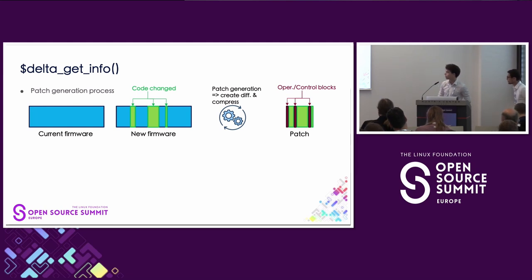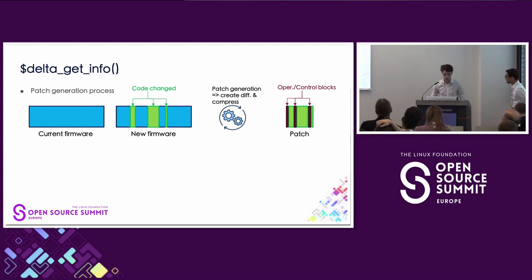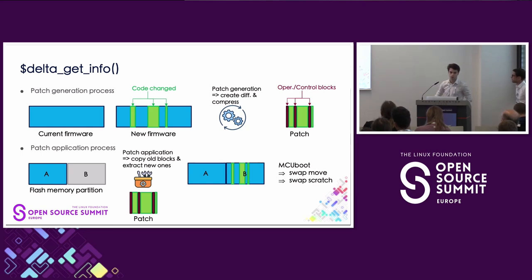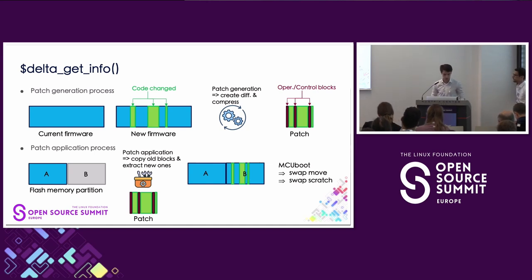When generating the patch, you can see that if there are, for example, three different blocks, the patch will contain different instructions: adding some bytes, copying some bytes, and skipping some parts. Once we've downloaded the patch, we can apply it. We chose an A/B strategy — as mentioned in the last presentation — for security reasons, because we want our device to be able to roll back in case of a bad or corrupted update.